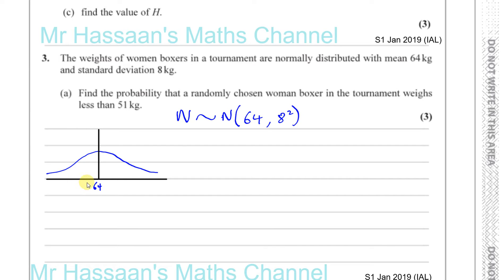We want to find the probability that a randomly chosen woman boxer weighs less than 51 kilograms. That corresponds to this area on the left side of the bell curve, which represents the probability that the woman weighs less than 51 kilograms. To find this, we need to standardize the result by finding the z-value.